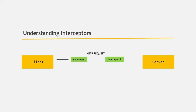Let's say we are using two interceptors. The request will first be received by interceptor one. Using the interceptor, we can manipulate the request — for example, adding some headers that are not already there. In order to forward this request from interceptor one, we need to call the next method. Then only will the request be forwarded to the next interceptor, or to the server if there is no more interceptor. Since we have two interceptors, when we call next from interceptor one, the request will be forwarded to interceptor two.